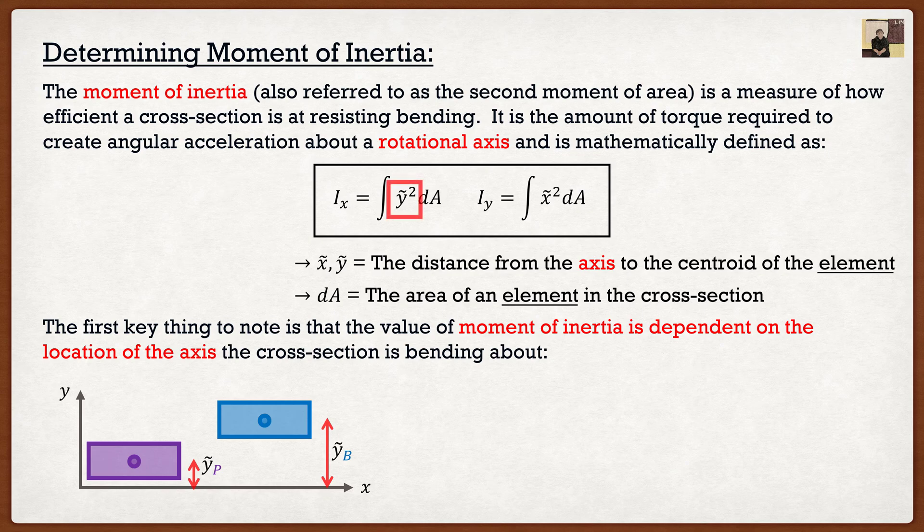And if we look at our formula for moment of inertia about the x axis, as we can see we're going to take that value, that distance, and we're going to square it. So this would actually result in the blue shape having a much greater moment of inertia than the purple shape, even though they are the exact same shape.